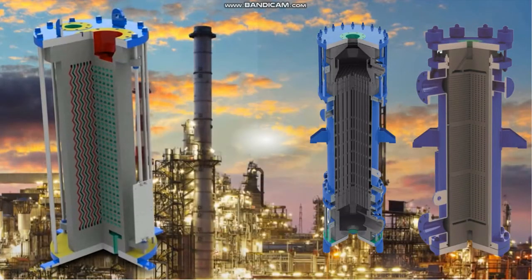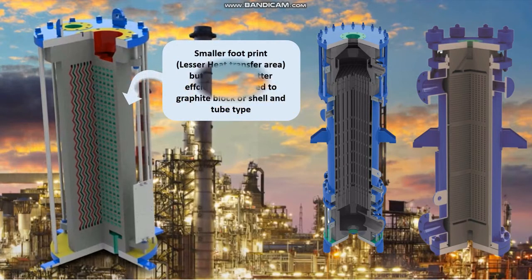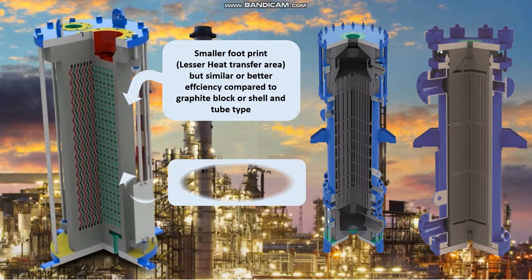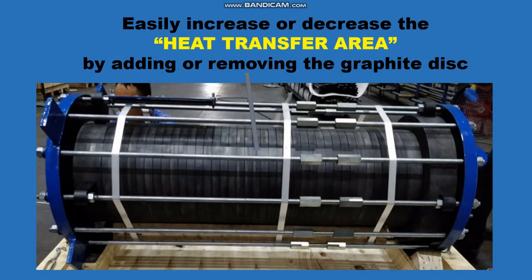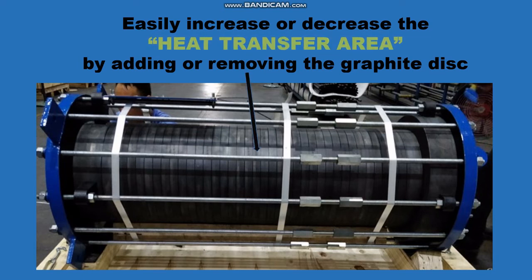Compared to graphite block-type and shell-and-tube heat exchangers, GT's disc-type heat exchanger can achieve similar or better efficiency with a smaller footprint. Moreover, it is non-sensitive to solvents used for API processes. Unlike block-type graphite heat exchangers, you can easily increase or decrease the heat transfer area by adding or removing graphite disks, making it flexible for multi-fluid use.